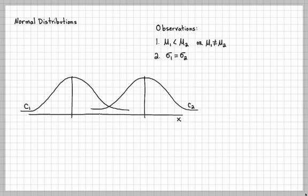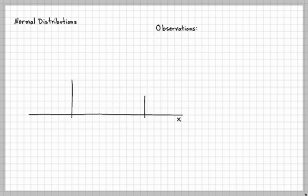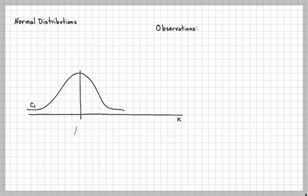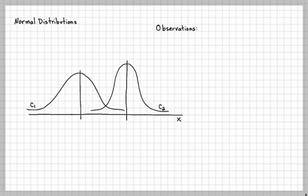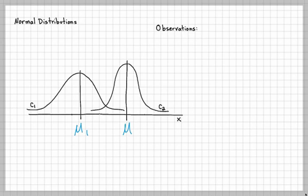Let's draw one more example. Here's curve one with mu one and a population standard deviation of sigma one. And here's curve two with its own mu two and its own spread, sigma two. Mu one and mu two are not the same — they're not in the same location on the x-axis. And the spreads also look different: curve one seems to be more spread out than curve two.